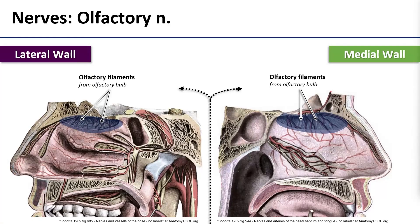Now on to nerves. When we think of nerves in the nasal cavity we often think of the olfactory nerve first, but it actually has only a very small territory — just the area highlighted on the roof of the nasal cavity and a little bit of the superior walls. The olfactory filaments from the olfactory bulb pass through the cribriform plate of the ethmoid through the cribriform foramina to supply this limited region near their origin.